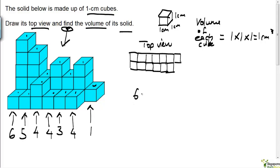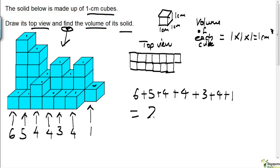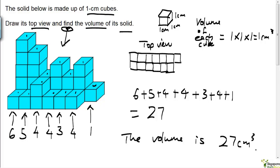You've also got one, two, three and a fourth cube hidden here, and one cube here. So the total number of cubes is six plus five plus four plus four plus three plus four plus one, which works out to be 27. Since each cube is one cubic centimeter, the volume of the solid is 27 cubic centimeters.